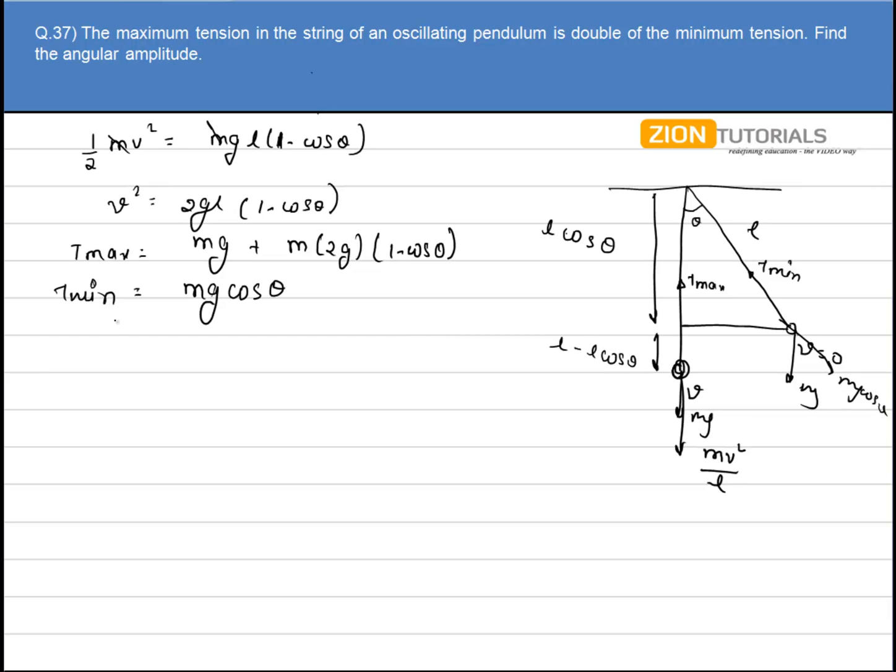It is given in the question that T max is 2 times the minimum tension. So substitute the values: I have T max as M G plus 2 M G times 1 minus cos theta equals 2 times M G cos theta. M G cancels from all sides. I have 1 plus 2 minus 2 cos theta equals 2 cos theta, so 3 equals 4 cos theta.